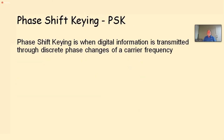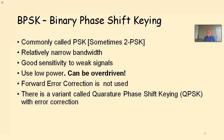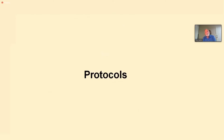Phase shift keying: when digital information is transmitted through discrete phase changes — remember the zero and 180 degrees. Sometimes called binary PSK — two changes of phase. Relatively low bandwidth since we're only looking at two little frequencies. We use low power because we can't overdrive it. There is a variant called QPSK which allows more bits per second. That's basically the modulation techniques overview.